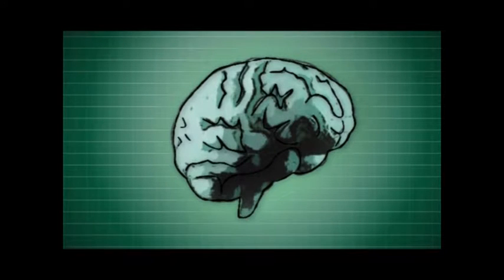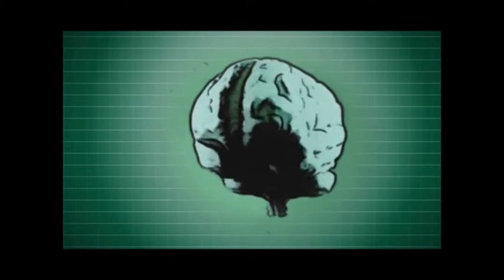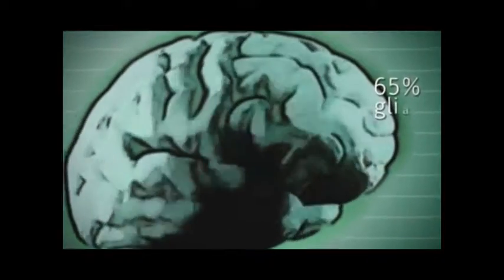This is a brain. It's grayish, lightish, and a little bit squishy. It's got a lot of stuff in it, ranging from the renowned neurons and blood vessels to a special, lesser-known assortment of cells called glia. A human brain is made 65% of glia, and on average, a mammal has 5 to 10 glia for every neuron.